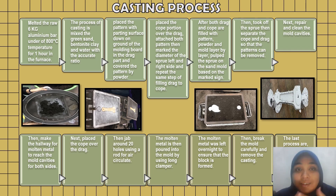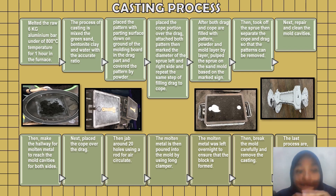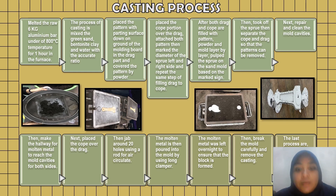The mold cavities are repaired and cleaned. A hallway is made for molten metal to reach the mold cavities on both sides. The cope is placed back over the drag, and about 20 holes are jabbed using a rod for air circulation. The molten metal is then poured into the mold using a long clamp and left overnight to ensure the block is formed. After that, the mold is carefully broken and the casting is removed. The last step is to inspect the product and clean the material.